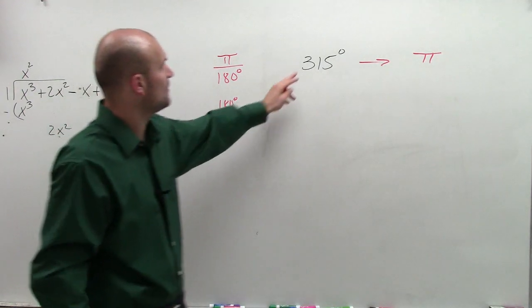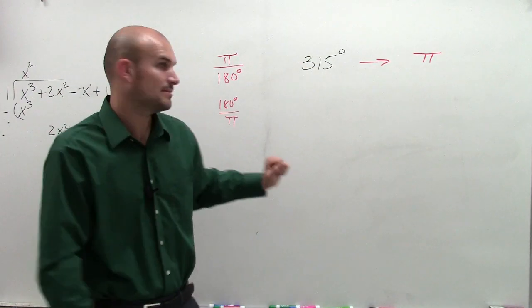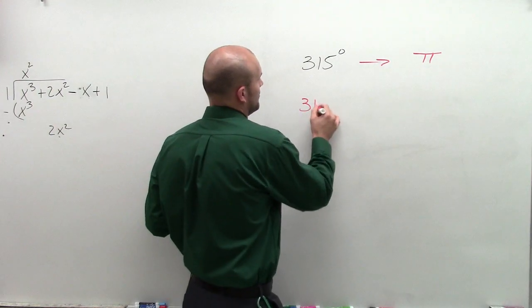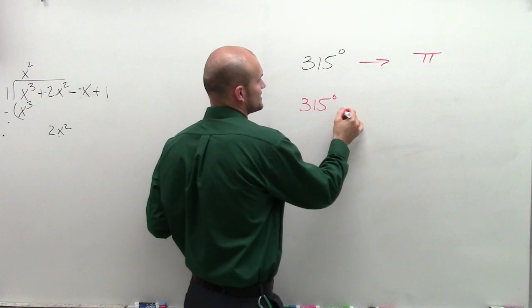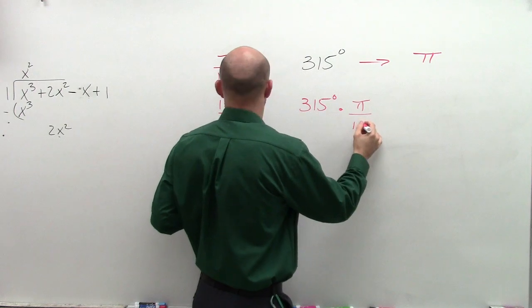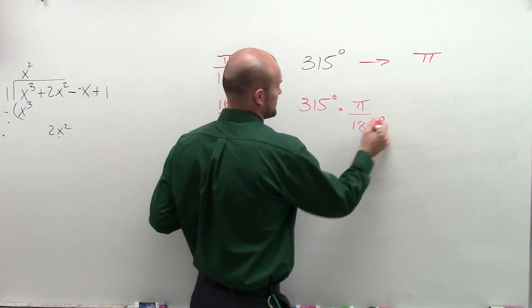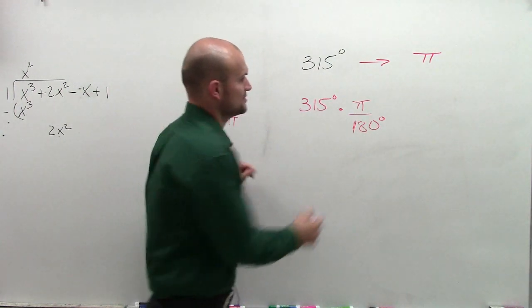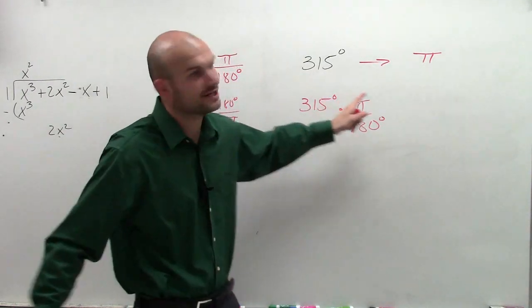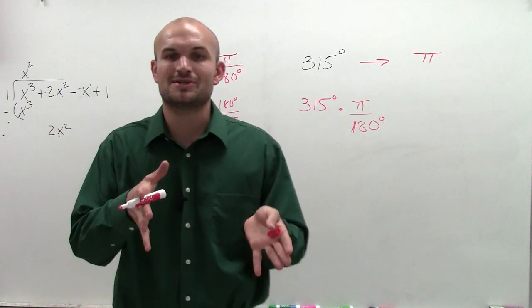However, what I want to do is get rid of the degree symbol. So if I multiply 315 degrees times pi over 180 degrees, then what happens, ladies and gentlemen, is you'll see that I'm dividing a degree by a degree, which is going to cancel out, as we say,